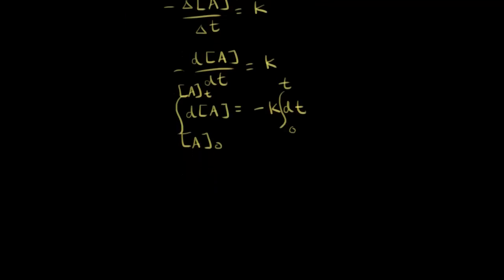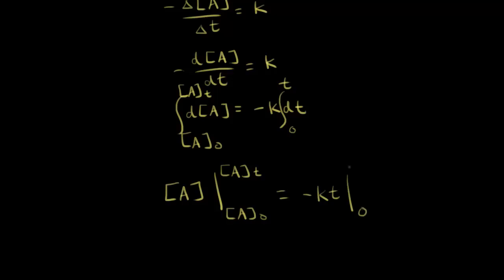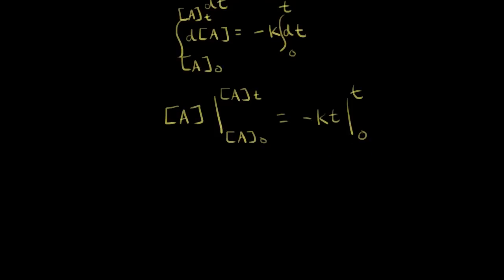We have easy integrals here. The integral of dA is just A — the concentration of A — evaluated from our initial concentration to our concentration of A at time t. On the right side, the integral of dt is just t, so we have negative Kt evaluated from zero to t. Applying the fundamental theorem of calculus, we get the concentration of A minus the initial concentration of A equals negative Kt. So this is one form of the integrated rate law for a zero-order reaction.